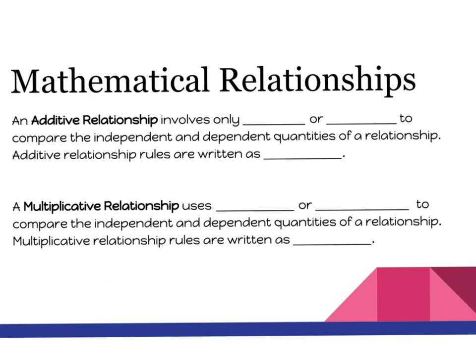The first thing we need to learn is the two different types of relationships. We have additive relationships and multiplicative relationships. We're going to define them and make sure you understand how to write the equation based on the relationship.